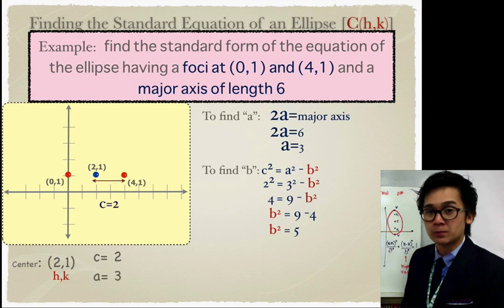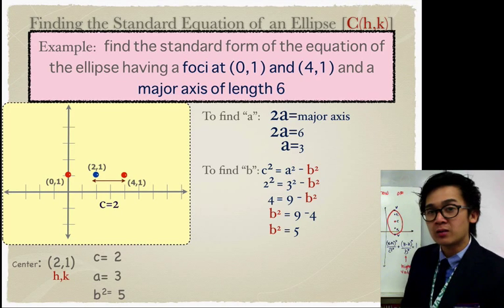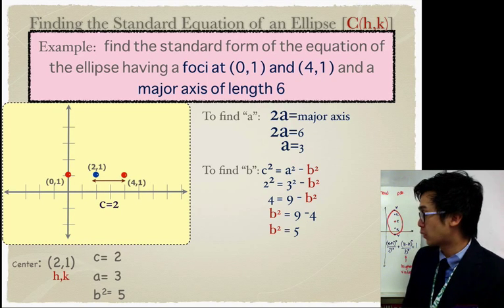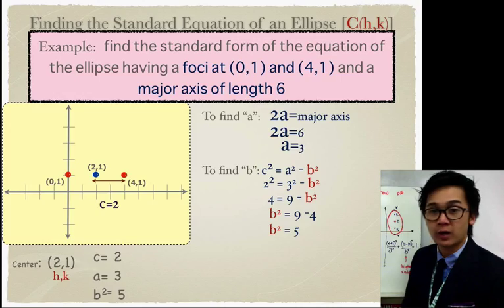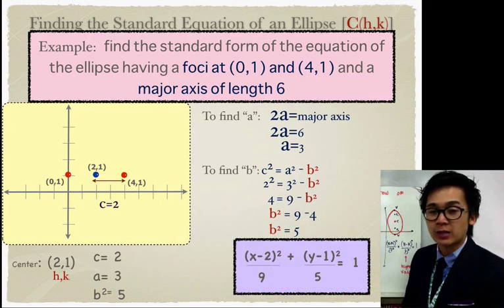We don't need to take the square root of b squared because the formula uses b squared directly. So we have c equal to 2, a equal to 3, and b squared equal to 5. The standard equation of an ellipse is (x − h)² / a² + (y − k)² / b² = 1. By direct substitution with center (2, 1), the standard equation is (x − 2)² / 9 + (y − 1)² / 5 = 1.